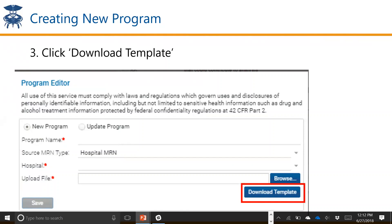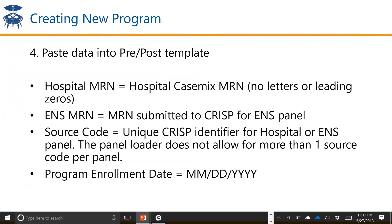You will click on 'Download Template.' The template is a simple Excel file with three columns asking for the source code of the MRN source you're using, the patient identifier (whether it be the hospital MRN or the ENS panel MRN), and then the start date. You'll paste your data into the template. The panel loader does not allow for more than one source code per panel, so you'll have to pick one and stick with it in the template. The program enrollment date uses a month/day/year format. All of this information is located in the documentation under the question mark icon.